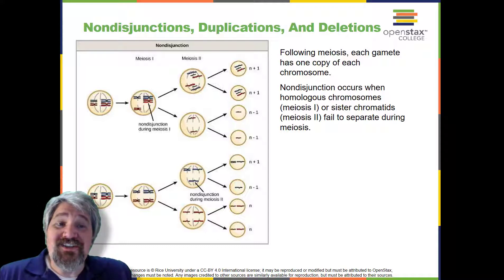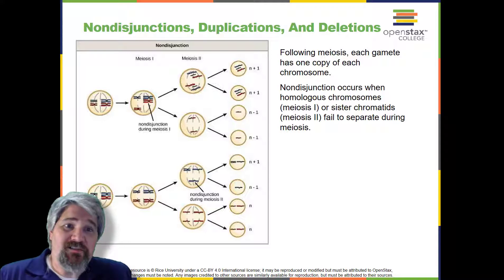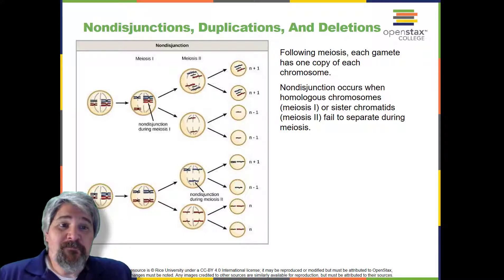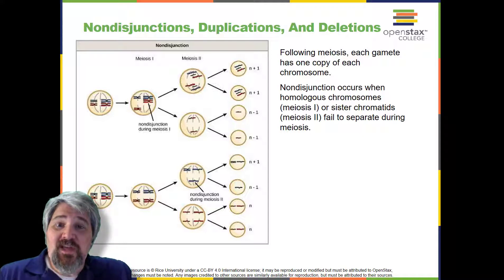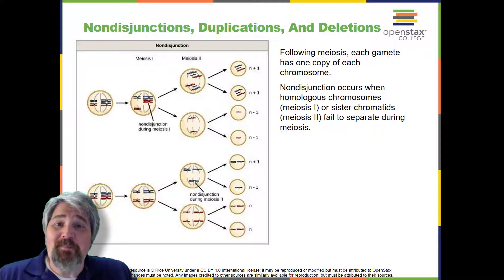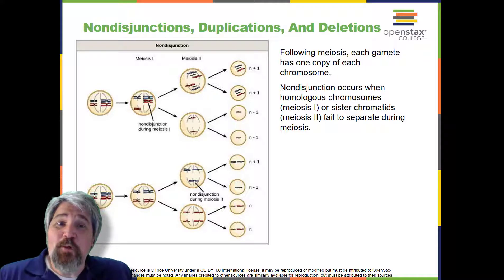The risk of non-disjunction increases with the age of the parents. Non-disjunction can occur during either meiosis 1 or meiosis 2 with different results. If homologous chromosomes fail to separate during meiosis 1, the result is 2 gametes that lack that chromosome and 2 gametes with 2 copies of the chromosome. If sister chromatids fail to separate during meiosis 2, the result is 1 gamete that lacks that chromosome, 2 normal gametes with 1 copy, and 1 gamete with 2 copies of the chromosome.